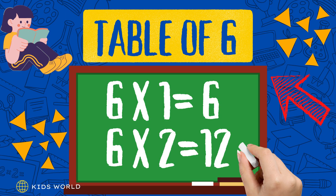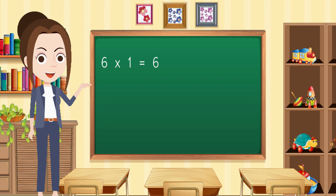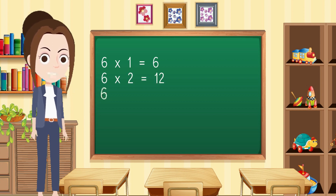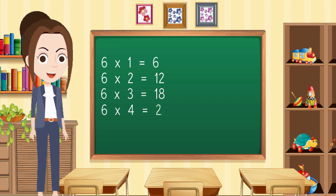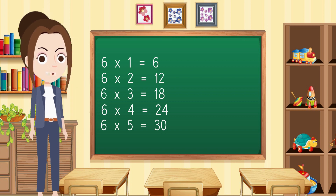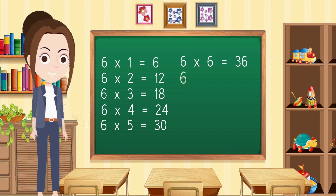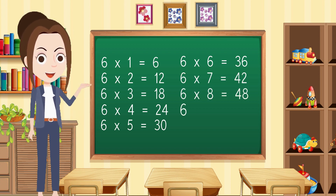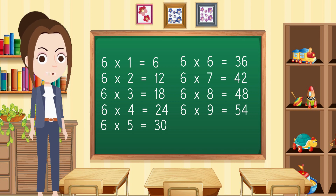Table of 6. 6 1s are 6, 6 2s are 12, 6 3s are 18, 6 4s are 24, 6 5s are 30, 6 6s are 36, 6 7s are 42, 6 8s are 48, 6 9s are 54, 6 10s are 60.